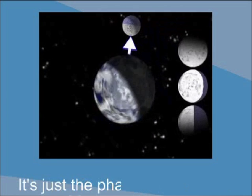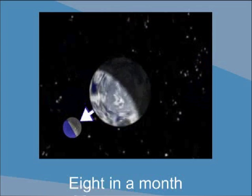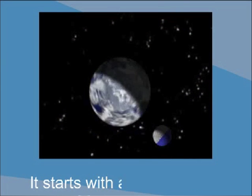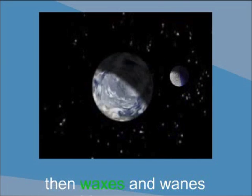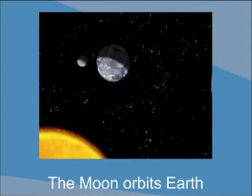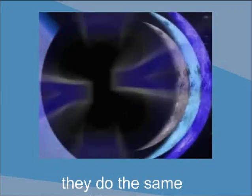It's just the phases of the moon, eight in the month, then replay that tune. It starts with a new moon, then waxes and wanes. The moon orbits Earth, and around the sun they do the same.